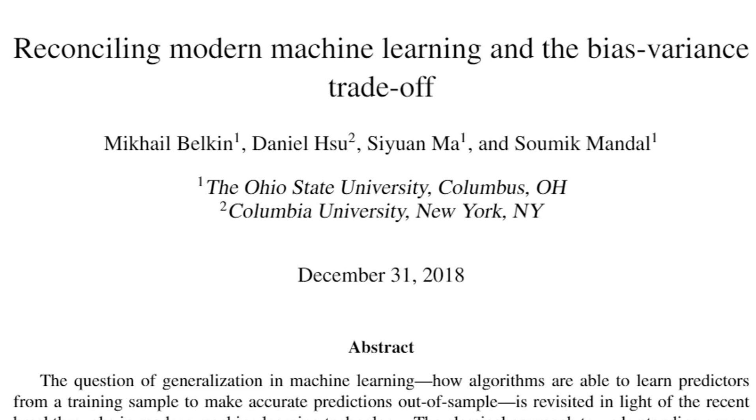Hi there, today we're looking at reconciling modern machine learning and the bias-variance trade-off by Mikhail Belkin et al. This paper struck me as interesting at ICML when I heard a talk by Mikhail Belkin and the paper is very interesting in terms of what it proposes about modern machine learning.